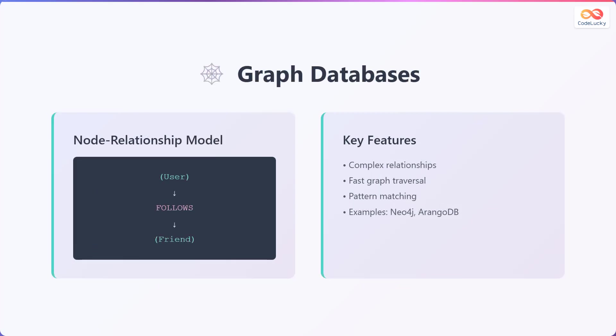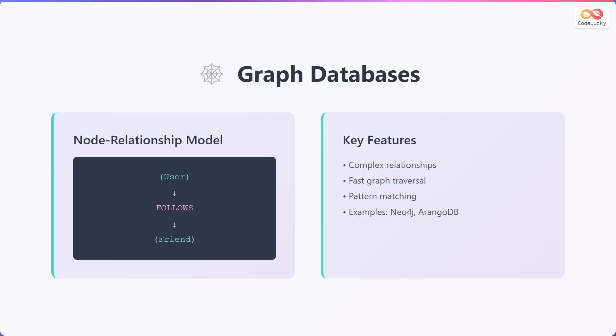Lastly, we'll cover graph databases. These databases use a node relationship model to represent and store data. For example, a user node has a follows relationship to a friend node. Key features include efficient management of complex relationships, fast graph traversal for querying connected data, and pattern matching capabilities for discovering relationships. Examples of graph databases include Neo4j and ArangoDB.